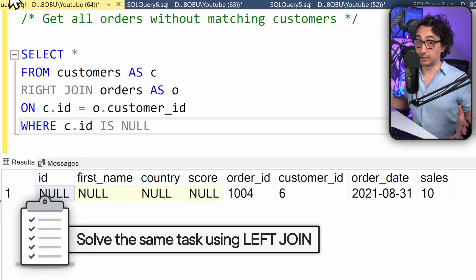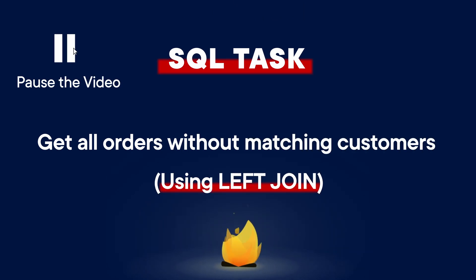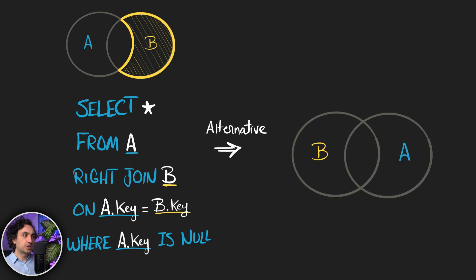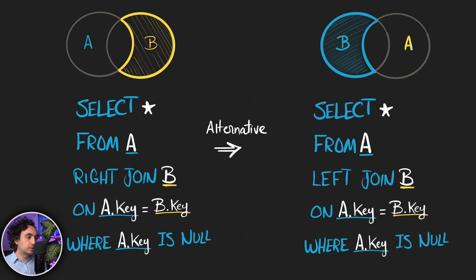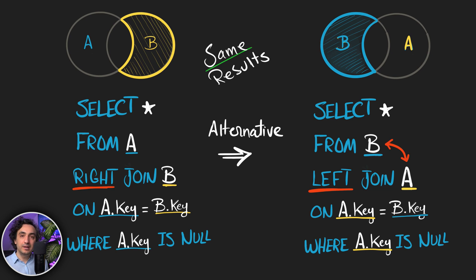Now the challenge: solve this task without using the right join but still get the same effect. As you know, we can create the same effects by switching the sides of the tables. Put the B table on the left side and A on the right side, switch the join type from right to left, switch the tables so you start from B, then join with A, and in the WHERE condition say the data from A is NULL. You get the exact same results using left join by just switching the tables.